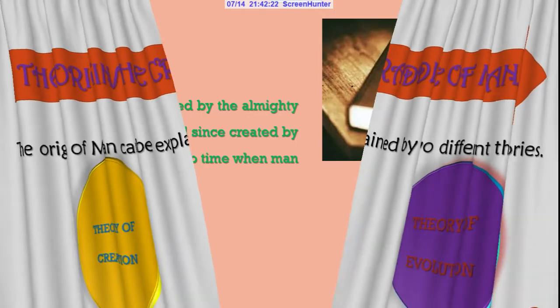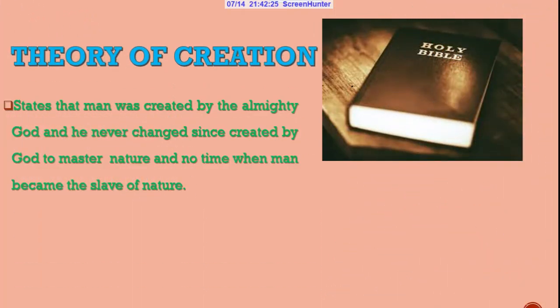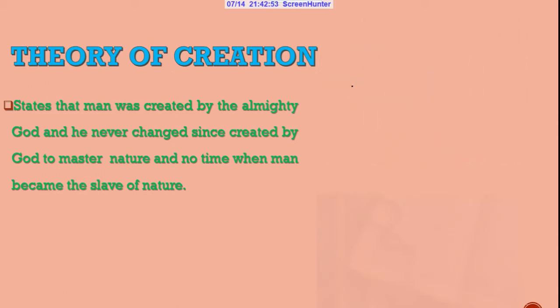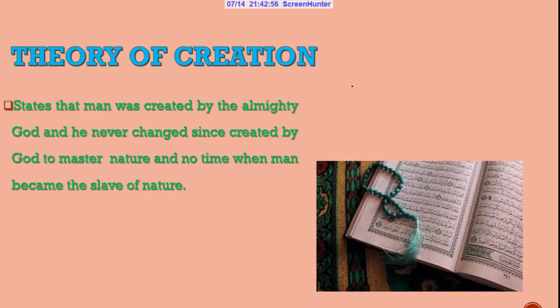Let us start with the theory of creation. The theory of creation states that man was created by the Almighty God, and since man was created he has never changed. God created man to master nature, and at no time did man become the slave of nature. This theory is well explained in two holy books: the Bible and the Quran.